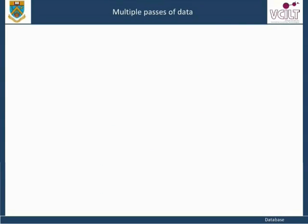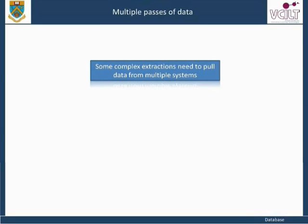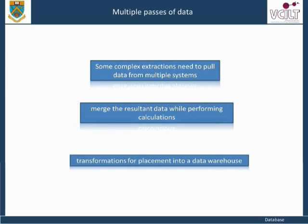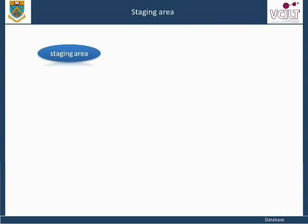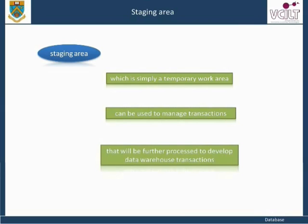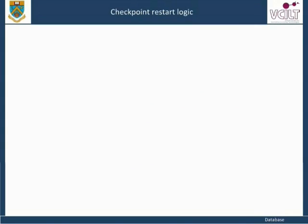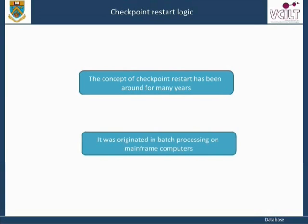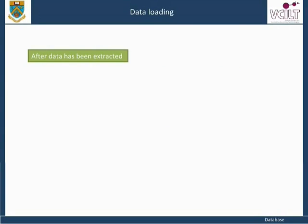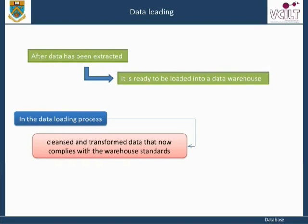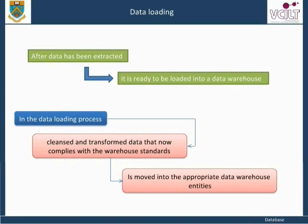Some complex extractions need to pull data from multiple systems and merge the resultant data while performing calculations and transformations for placement into a data warehouse. A staging area, which is simply a temporary work area, can be used to manage transactions that will be further processed. The concept of checkpoint restart has been around for many years, originating in batch processing on mainframe computers. After data has been extracted and cleansed, transformed data that complies with warehouse standards is moved into the appropriate data warehouse entities.